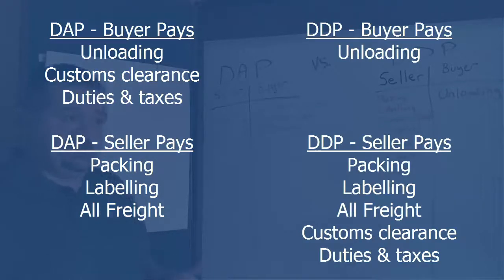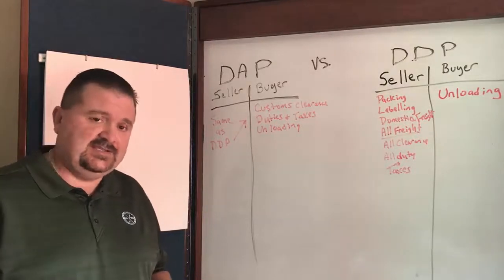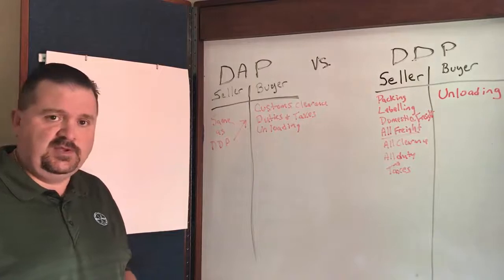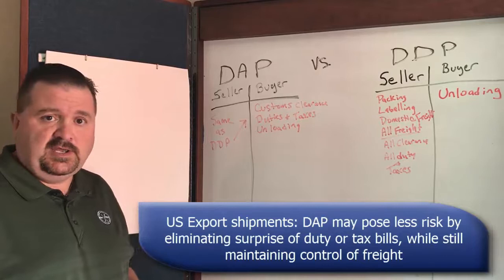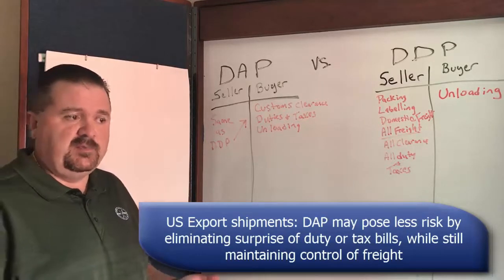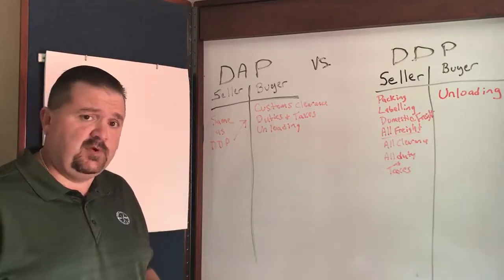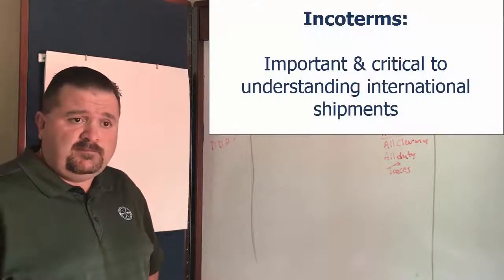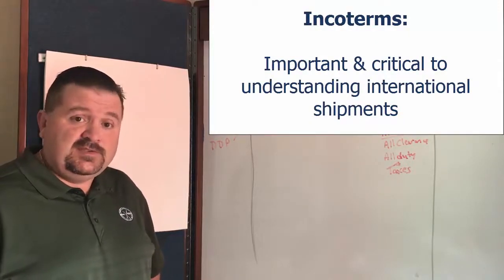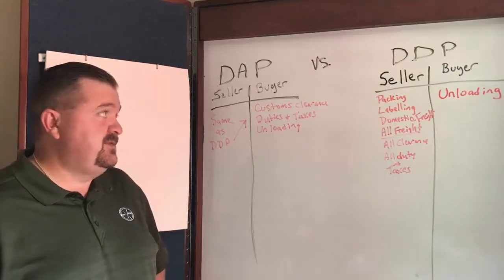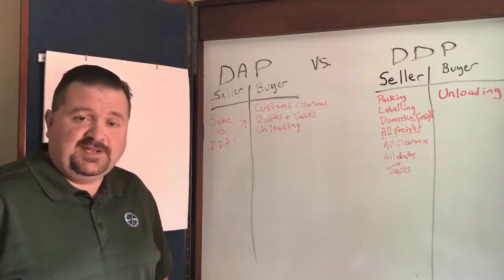To me, on U.S. export shipments, if you want to control the freight but you do not want to get involved in local taxes that you may or may not be familiar with, DAP is a less risky proposition. You can have more control over it without being worried about a surprise duty or tax bill. Incoterms are really, really important and critical to understanding an international shipment move. That was a quick synopsis of the difference between DAP and DDP — I would always welcome any questions. Thank you for your attention and have a great day.